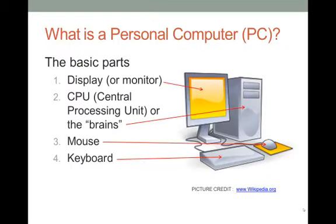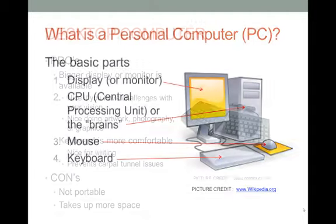What is a personal computer? The basic four parts are the display or monitor, the CPU — the central processing unit, or what I call the brains — the mouse, and the keyboard. Let's talk about those one at a time.